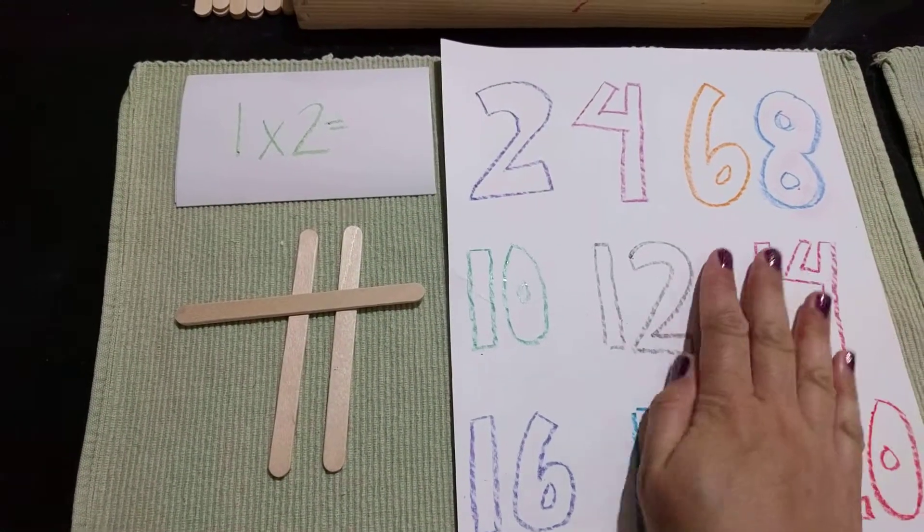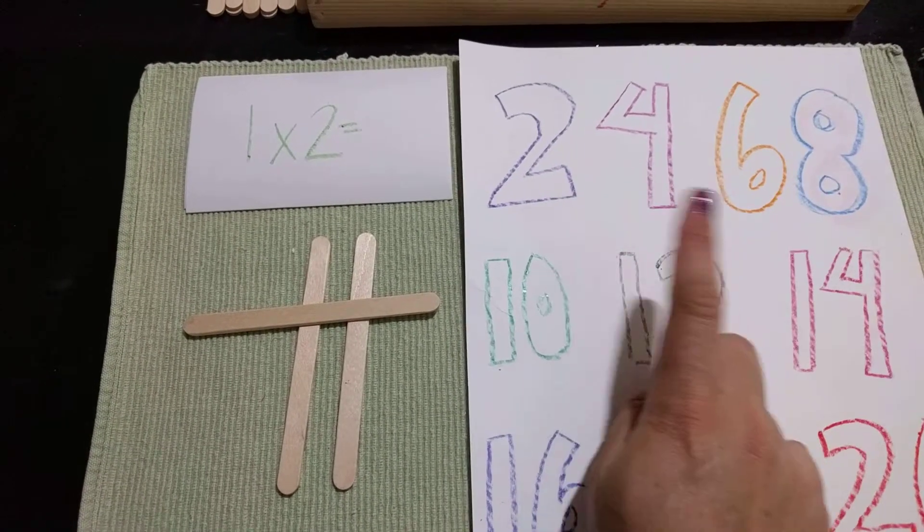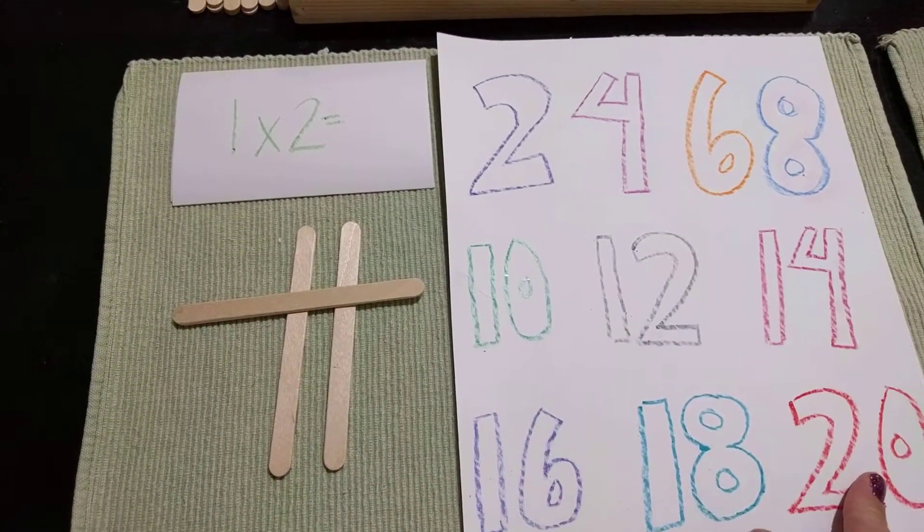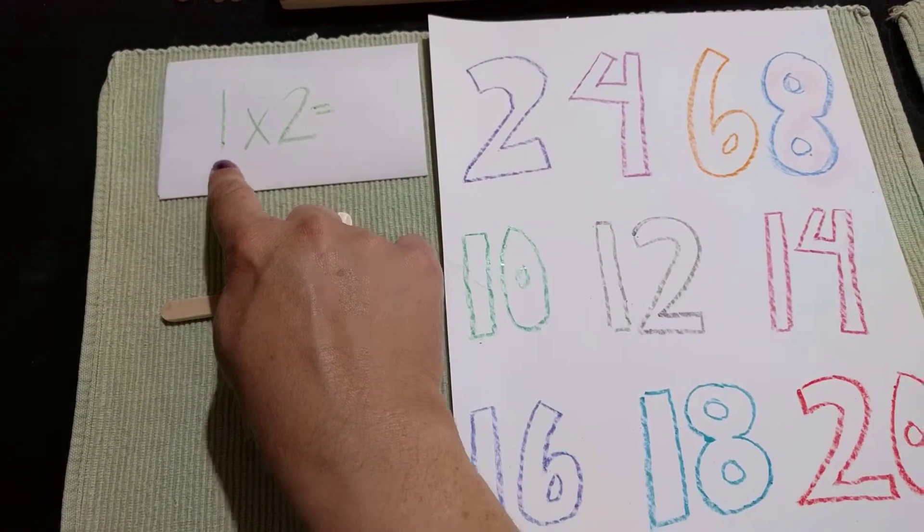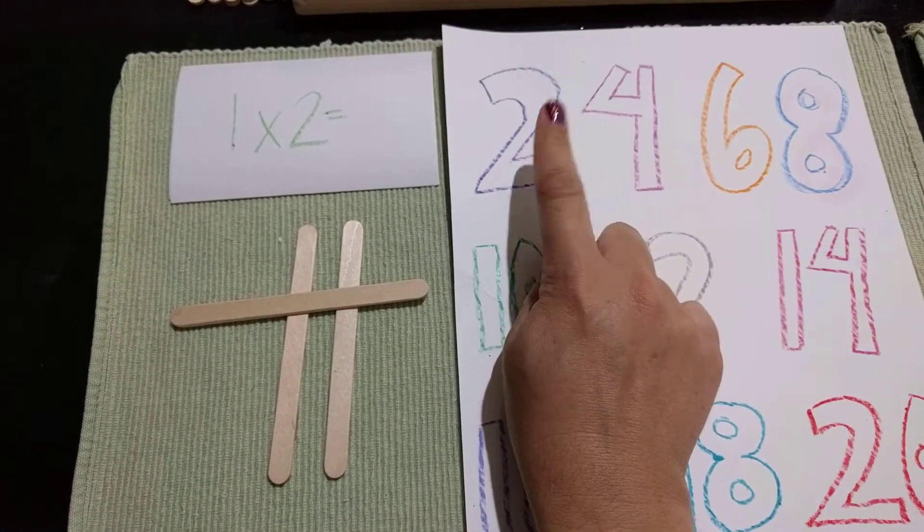You can also look at our 2 chart. 2, 4, 6, 8, 10, 12, 14, 16, 18, 20. The first number is number 1. 1 times 2 is 2.